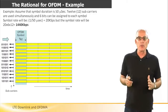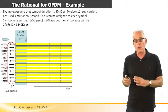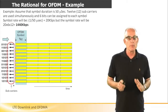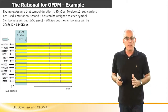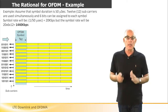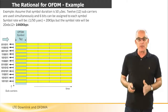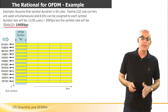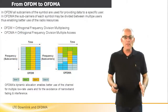Let's take the same situation where we have a symbol duration of 50 microseconds, and let's assume now that we use 12 subcarriers instead of one. In this case, the data rate will be calculated as follows: each subcarrier can carry 6 bits, and we'll multiply these 6 bits by the number of subcarriers — so it's 72 bits for each symbol. Multiplied by 20 kilo symbols per second, we get a maximum data rate of 1,440 kilobits per second — significantly higher than the 120 kilobits per second seen earlier. So this is the basis for OFDM.